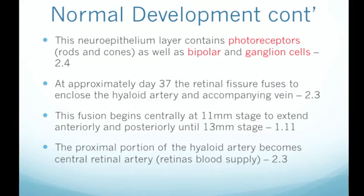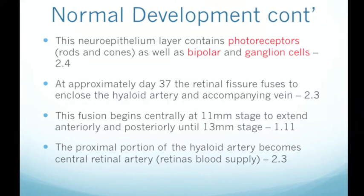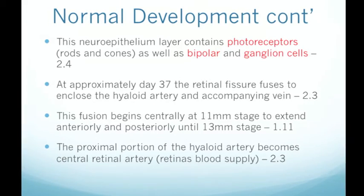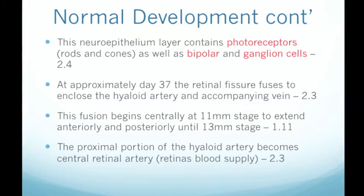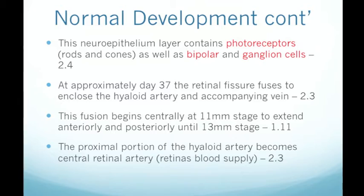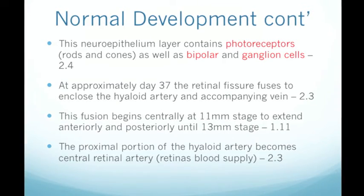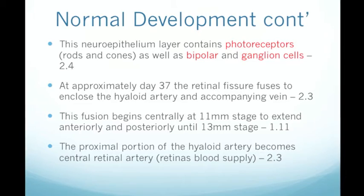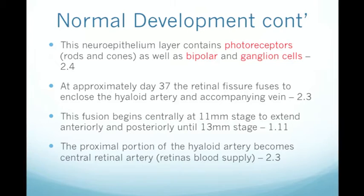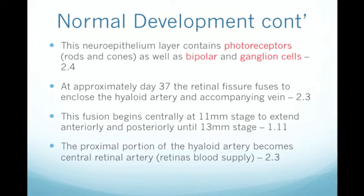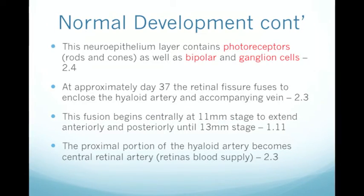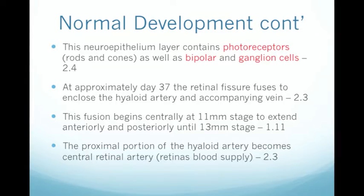At approximately day 37 of development, the retinal fissure fuses to enclose the hyaloid vessels — the artery and vein. The fusion begins centrally at the 11mm stage and extends anteriorly and posteriorly until the 13mm stage. A similar pattern of closure occurs during neural tube development, where the anterior and posterior neuropore fuse beginning centrally. The proximal portion of the hyaloid artery becomes the central retinal artery, providing the retina with a blood supply.